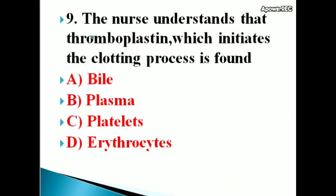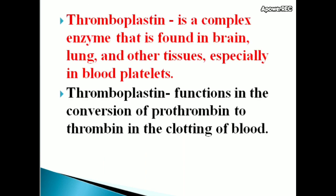Next question: The nurse understands that thromboplastin, which initiates the clotting process, is found in — options: platelets and erythrocytes. The correct answer is platelets. Thromboplastin is a complex enzyme found in the brain, lungs, and other tissues, especially in blood platelets.